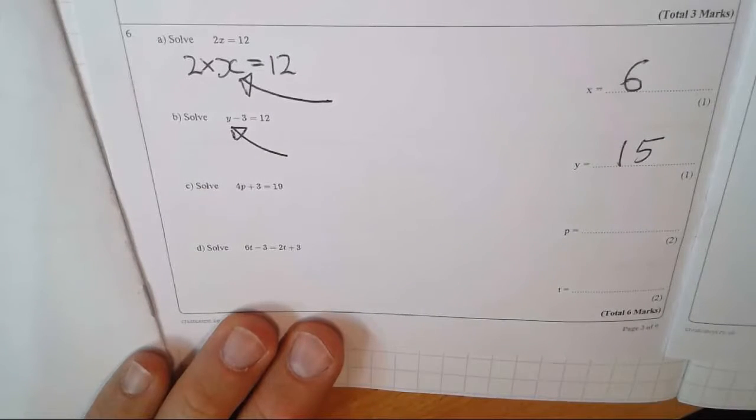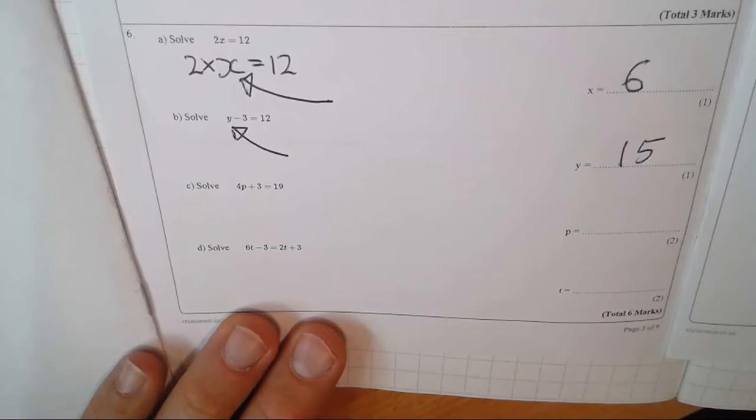A lot of people put 9 there, because they just saw minus 3 and a 12 and did 12 take away 3. It's something take away 3 is 12. That letter is a number we don't know yet.